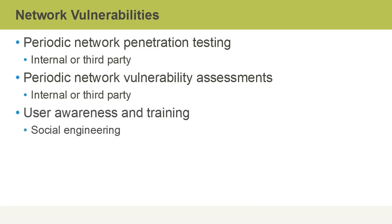The biggest single most important factor is user awareness and training on things like social engineering and trickery. All of the hardening we've discussed is pretty much useless if users irresponsibly open file attachments in messages that look suspicious or that they weren't expecting, or click links on websites they shouldn't be visiting.